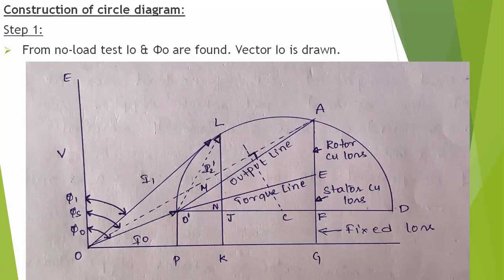So now we will see some data in the circle diagram — the maximum quantities. We are having really three maximum quantities. What are the maximum quantities? In this circle diagram, M point is the maximum output, point N is the maximum torque or maximum rotor input, and the last one is point R. I will show you in the next circle diagram.